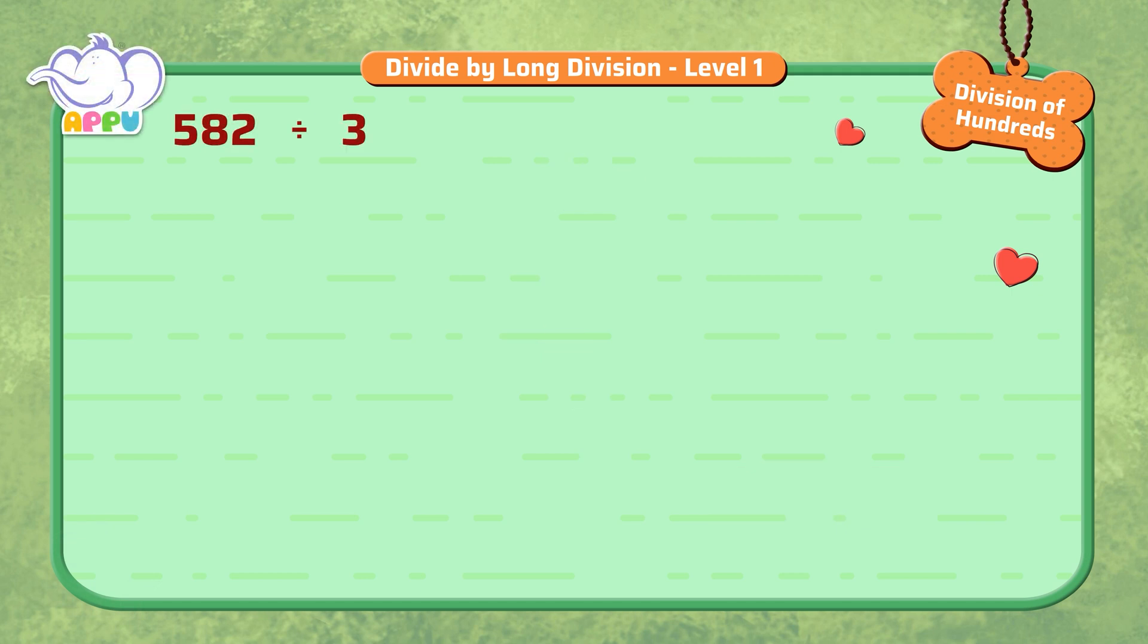582 divided by 3. We write the division bracket and write 3 outside the bracket and 582 inside the bracket. Step 1. We figure out how many 3's does it take to make 5 or almost 5, which is 1. Step 2. We multiply 3 and 1 to get 3.